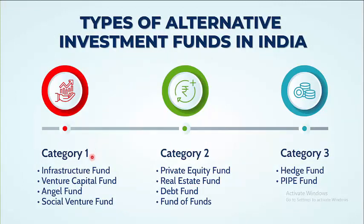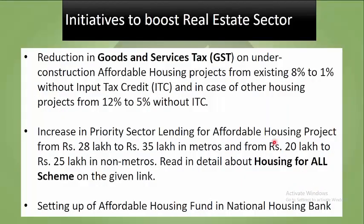There are 3 categories of AIFs. Category 1 includes infrastructure funds, venture capital funds, angel funds, and social venture funds. Category 2 consists of private equity funds, real estate funds, debt funds, and fund of funds. Category 3 consists of hedge funds and PIPE funds.